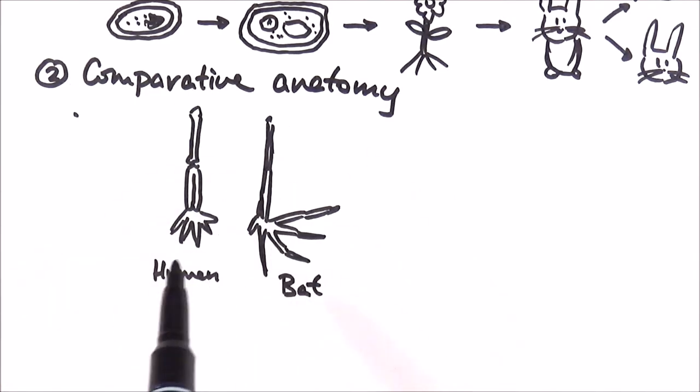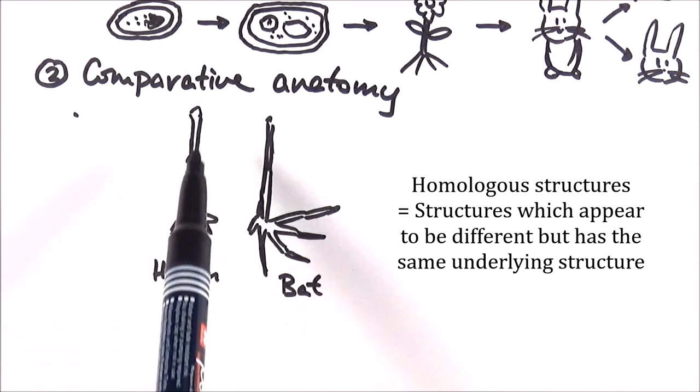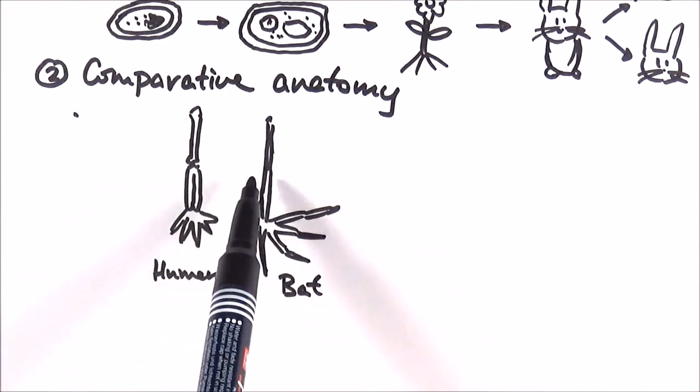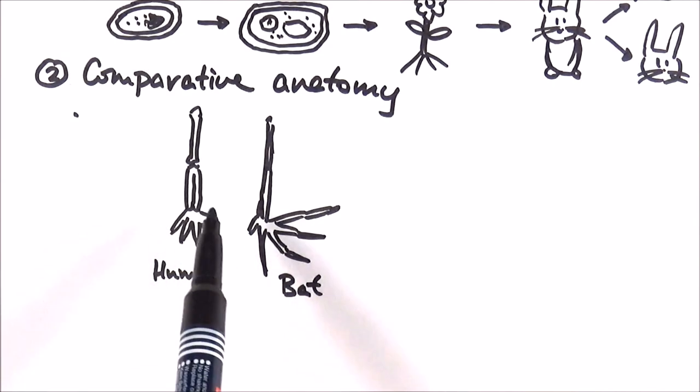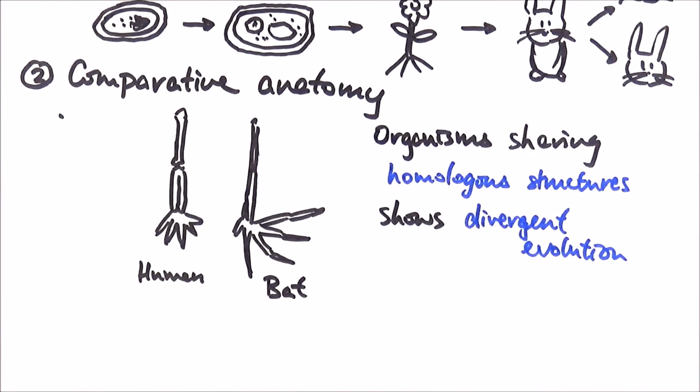And we say that these are homologous structures, and here you can see that there are many similarities. For example, the main part of the arm is made up of two different sections of the bone, cut down somewhat in the middle. Then we've got five digits, and also five digits on the bat. And that is evidence of divergent evolution. And that is comparative anatomy.